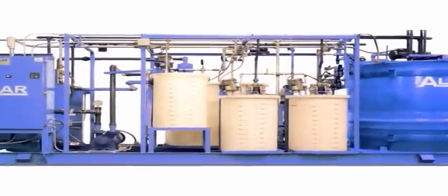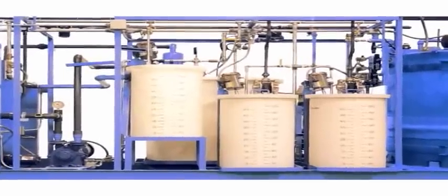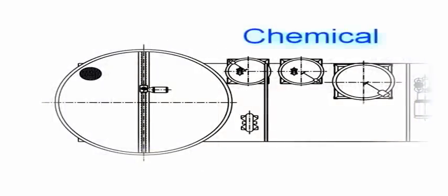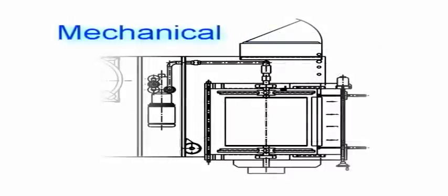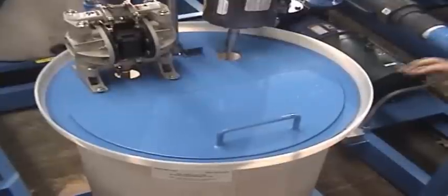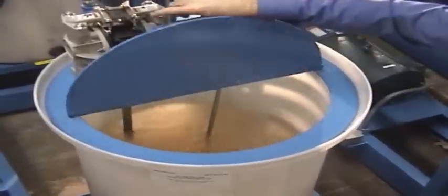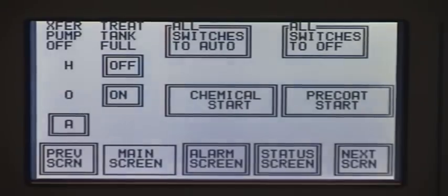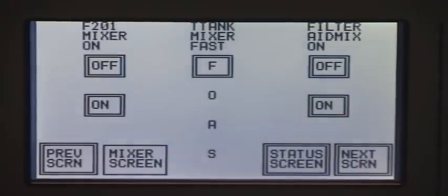Alar's FlexoStar is engineered to incorporate a two-step filtration process: chemical and mechanical. The first step, chemical treatment, breaks the solids and liquids apart by automatically adding chemical pre-treatments such as pH adjusters, polymers, or clays.